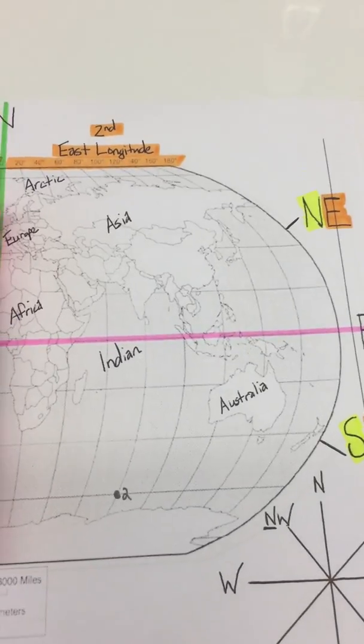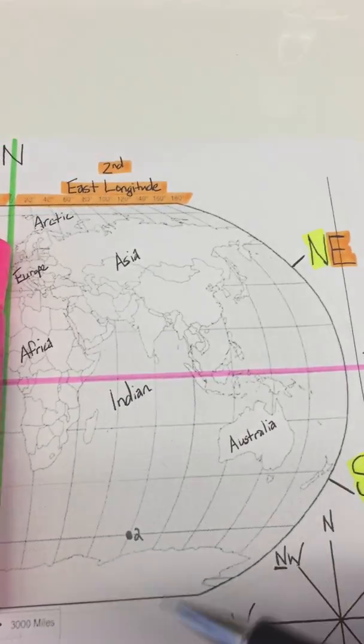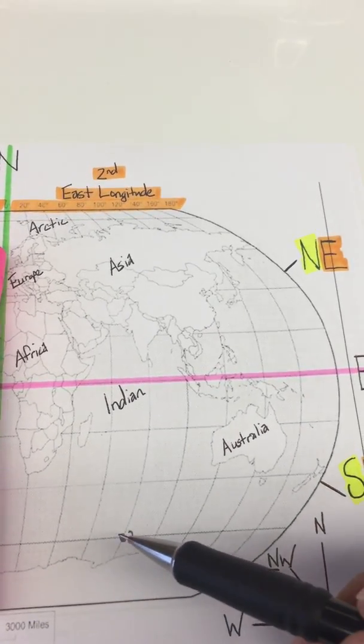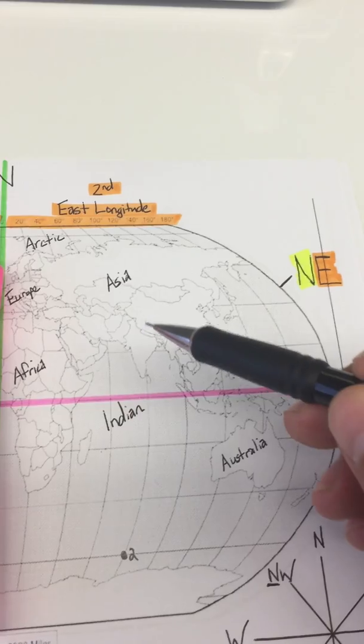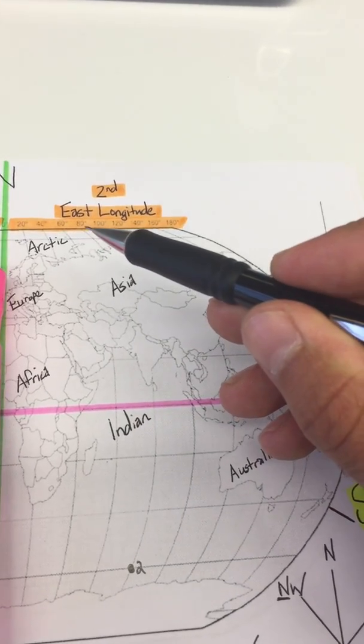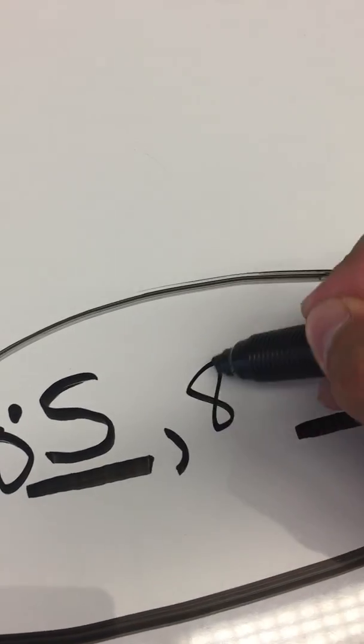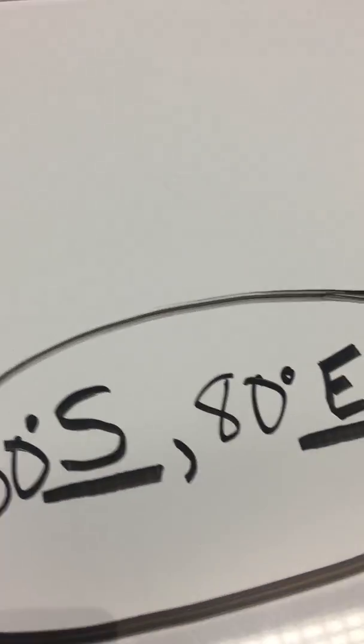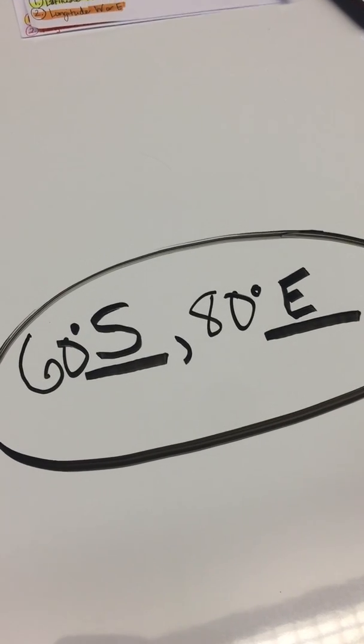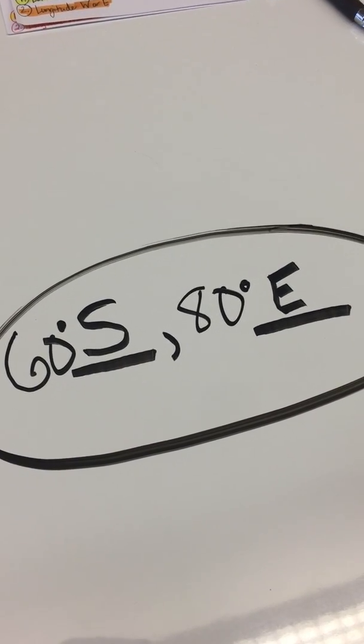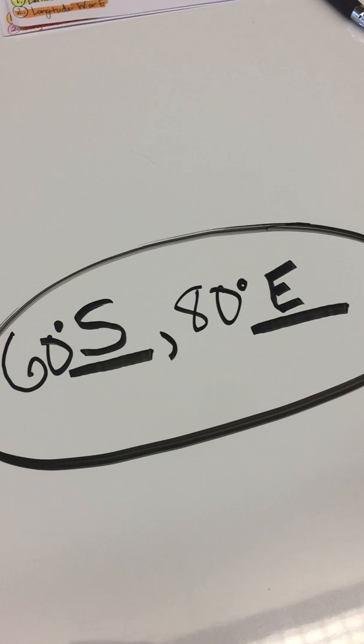Now, if you take a look at point number two, right here, we've got to find longitude second, of course. You're going to trace all the way up, and you're going to run into the number. So from there, all you have to do is write 80 degrees east, and that is the other way of finding latitude and longitude.